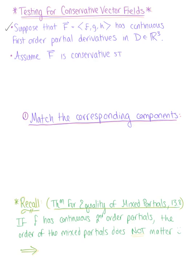To get us started, we want to suppose that vector F with components F, G, H has continuous first-order partial derivatives in space, or in some region D in R3. We assume that vector F is conservative such that vector F is defined by the gradient of our potential function phi, which is equal to the vector whose components are made up of the partial derivatives with respect to each variable.